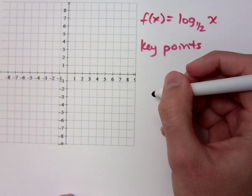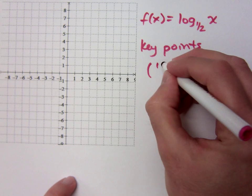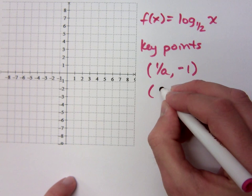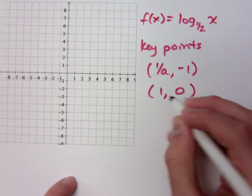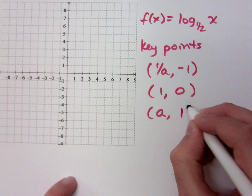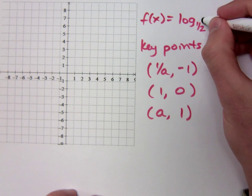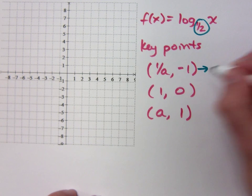Your key points are the ones you need to memorize. That will be 1 over a, negative 1; 1, 0; a, 1. These are your key points, which means for me, since my a is one-half, what are my key points?